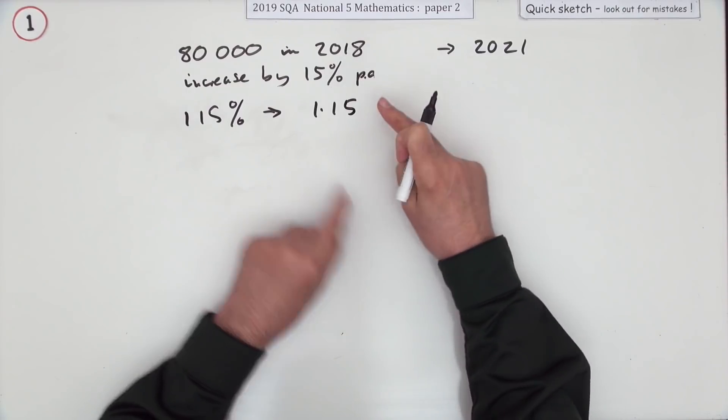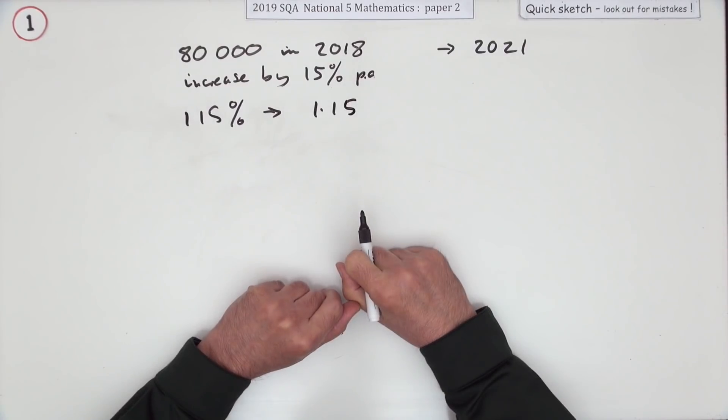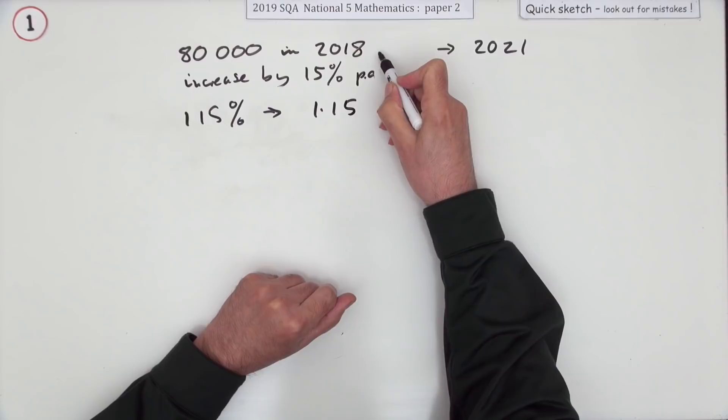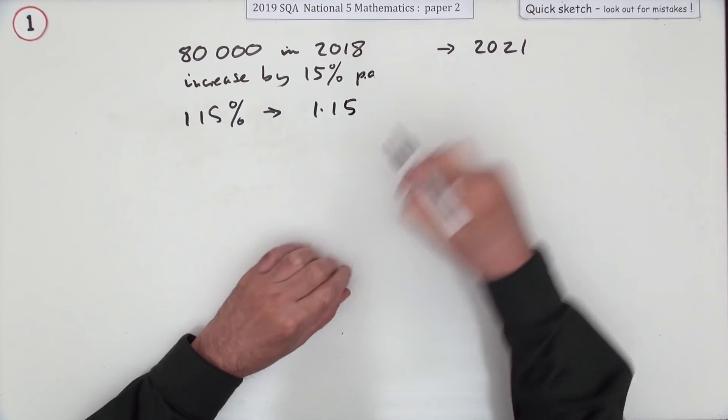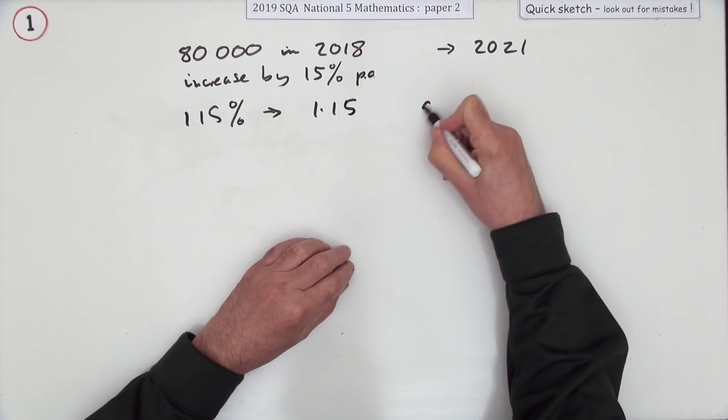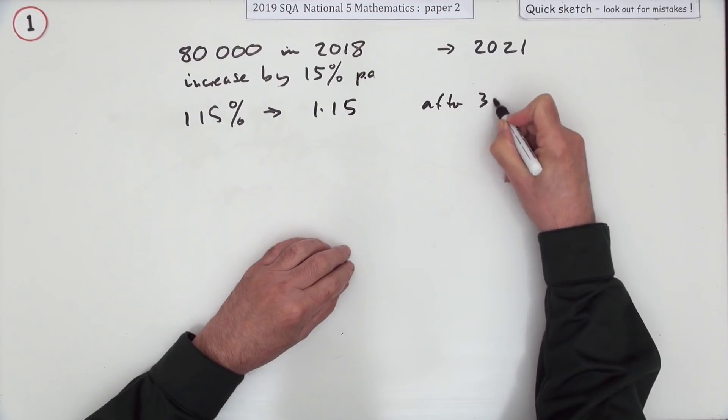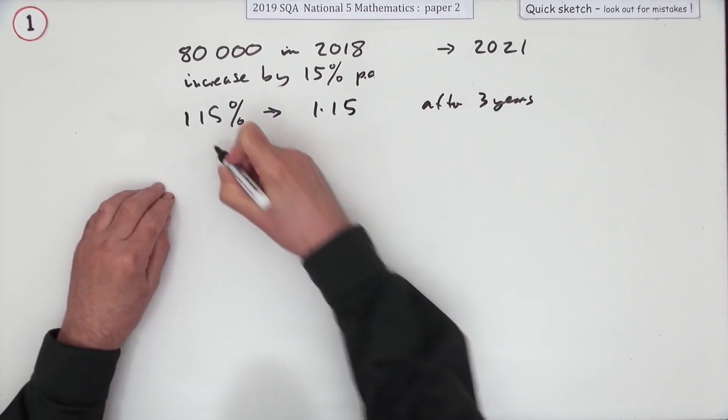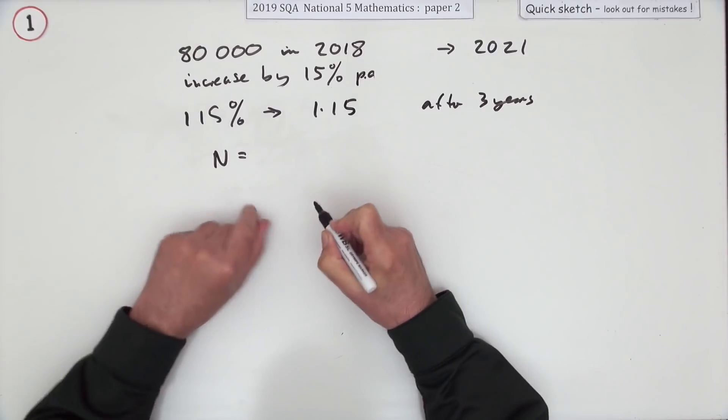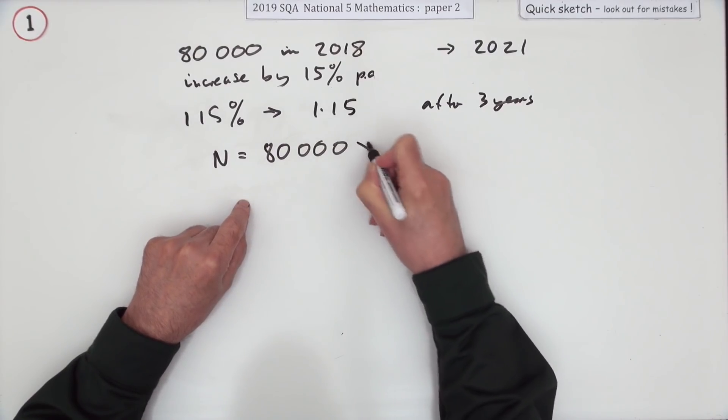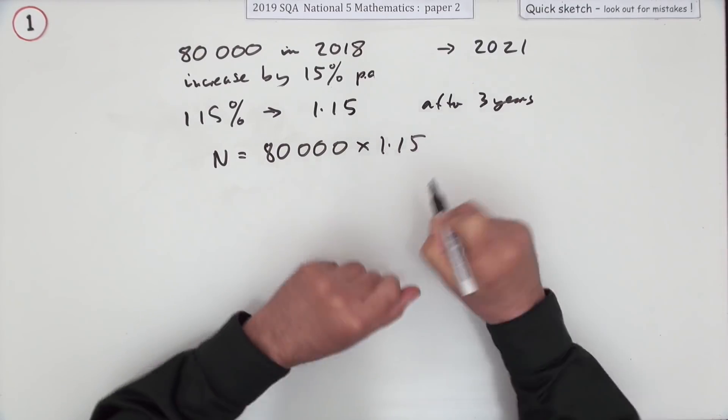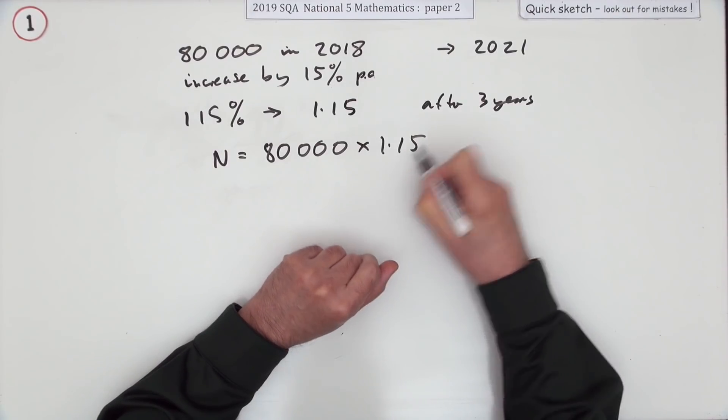The next thing would be, well, how many times are you going to multiply by this? Well, 2019, 20, and 21—that's three times, that's after three years. So the number you would expect to distribute would be 80,000 multiplied by that factor which increases it by 15%, and do that three times.